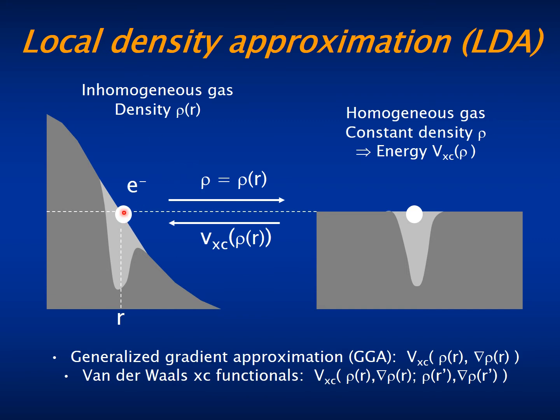The simplest one is the local density approximation. In this, we make the exchange and correlation potential depend on the density at only the point at which the electron is. To calculate this potential,